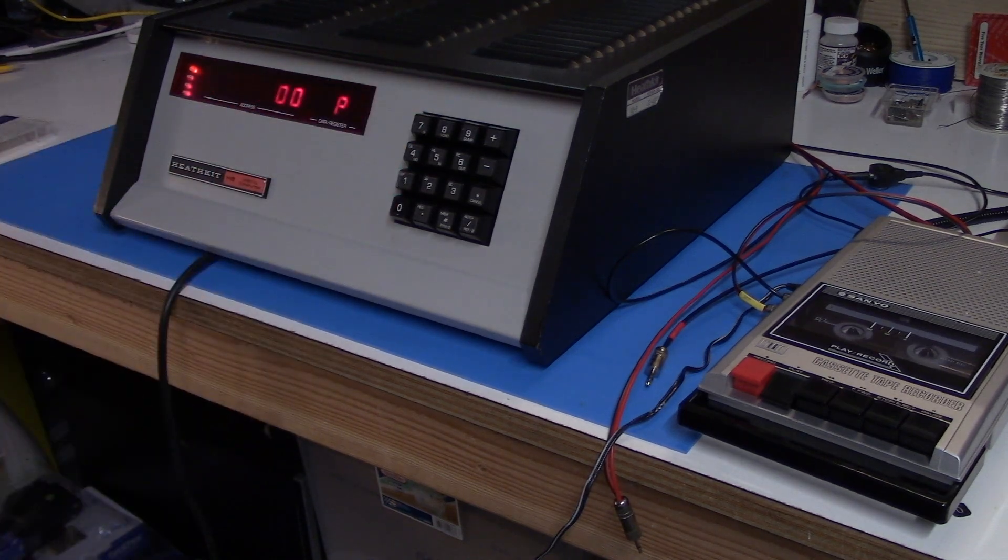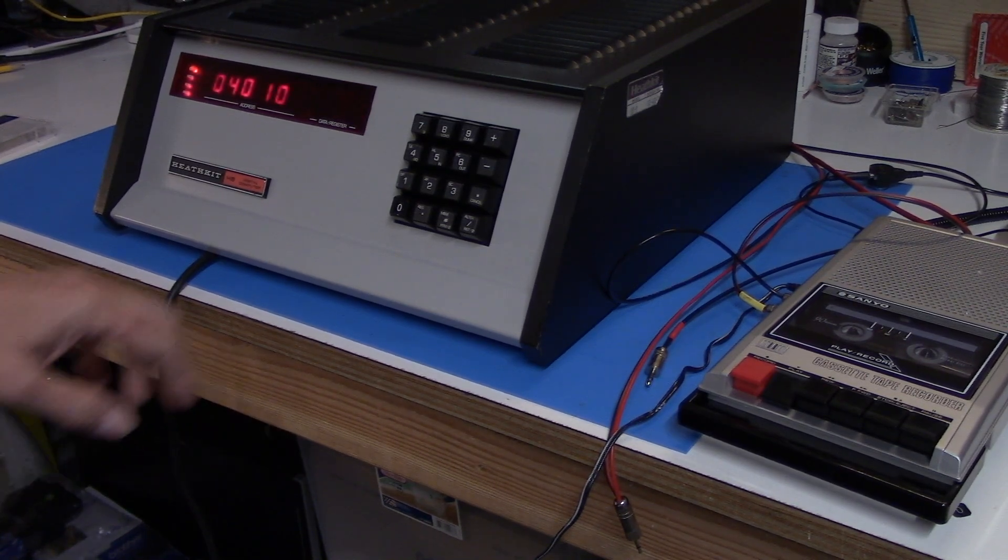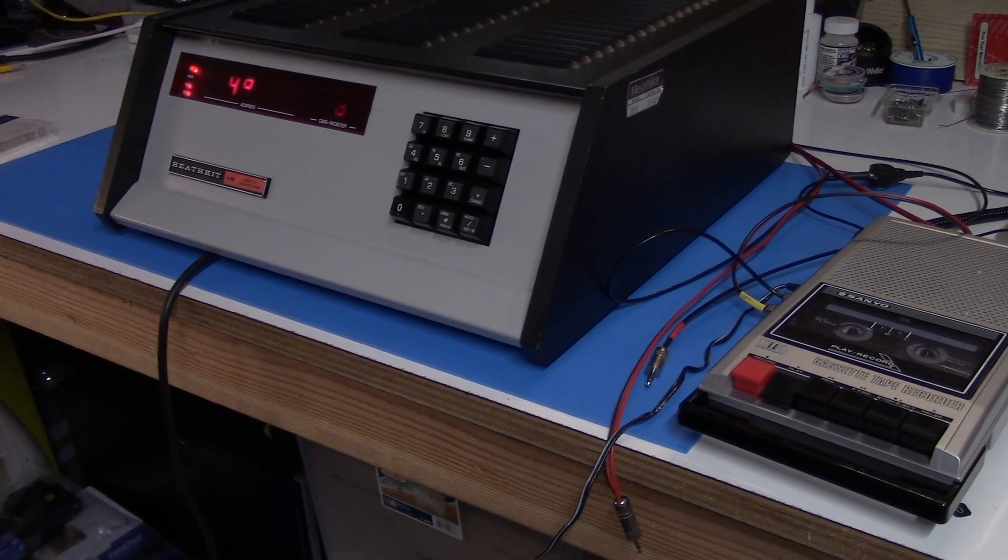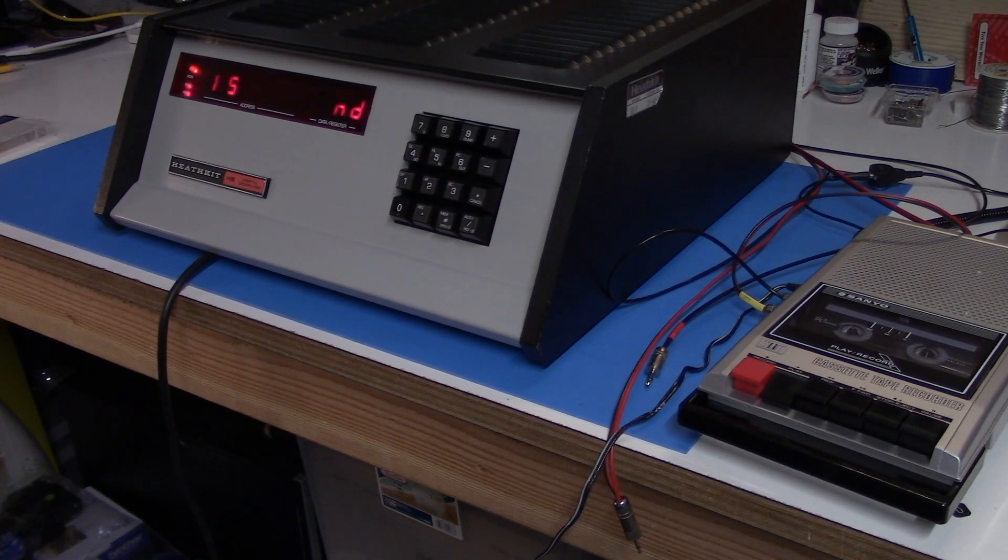And now this time it's different. Instead of seeing the 030000 we see the correct starting address for the program and all I have to do is hit the go button. So there we go, we are reading from and writing to cassette tape. It's not the best solution in the world and I would love to get the h17 disk drives going but that's kind of where we are so far. At least there now is a way to save and load programs.